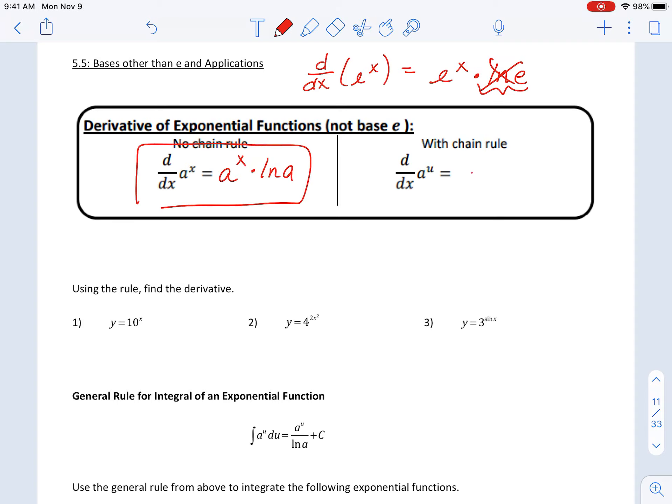And if we had a chain rule going on, the derivative of a to the u would be a to the u times ln of a. And then chain rule always, du dx.